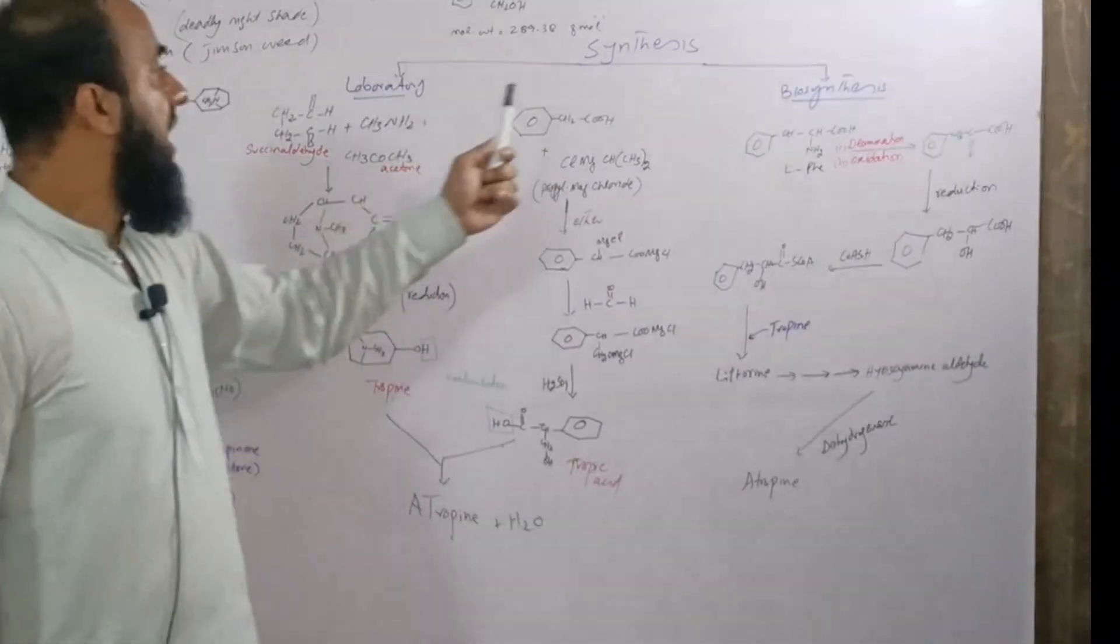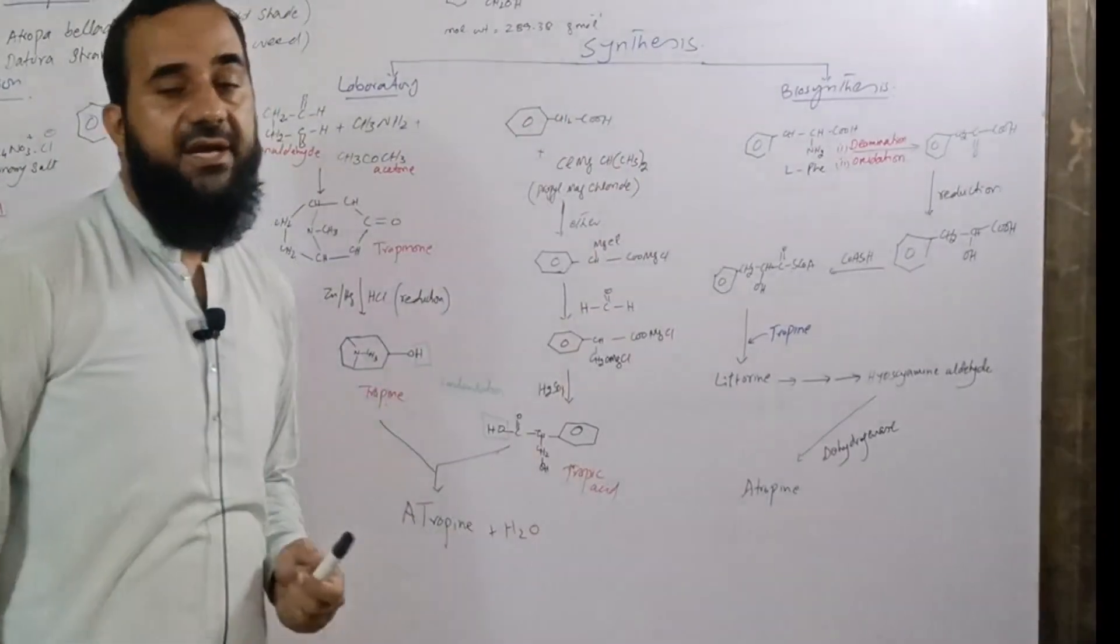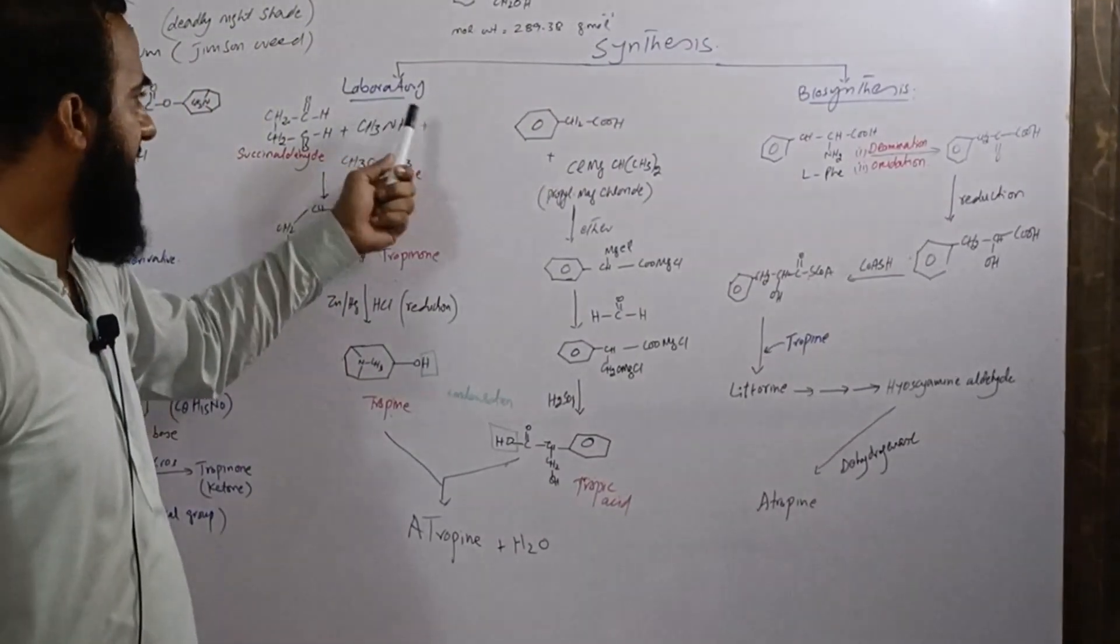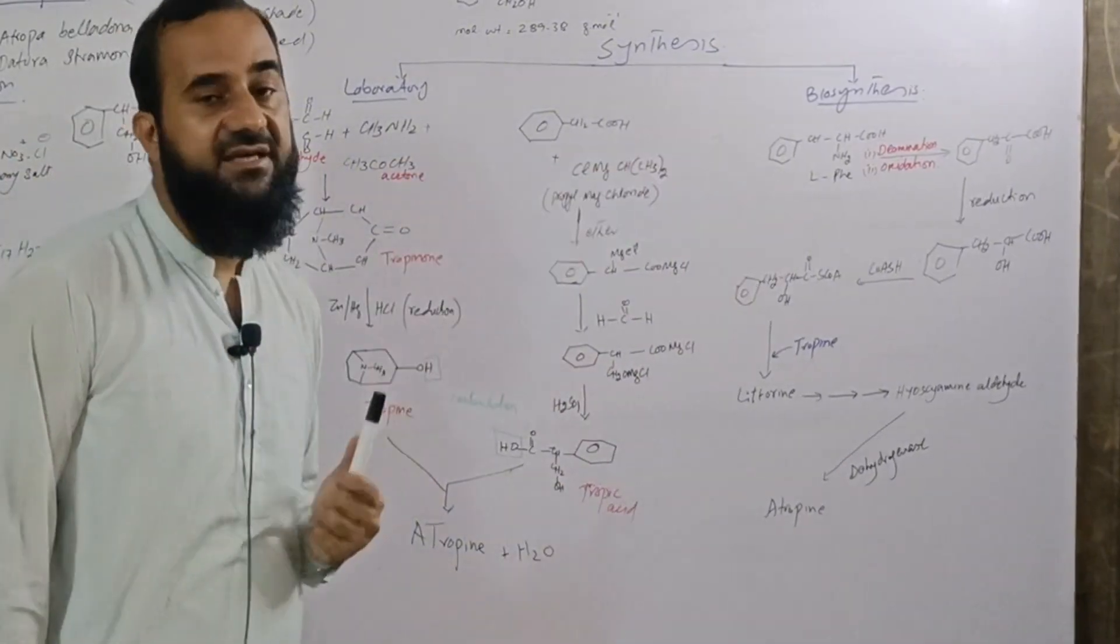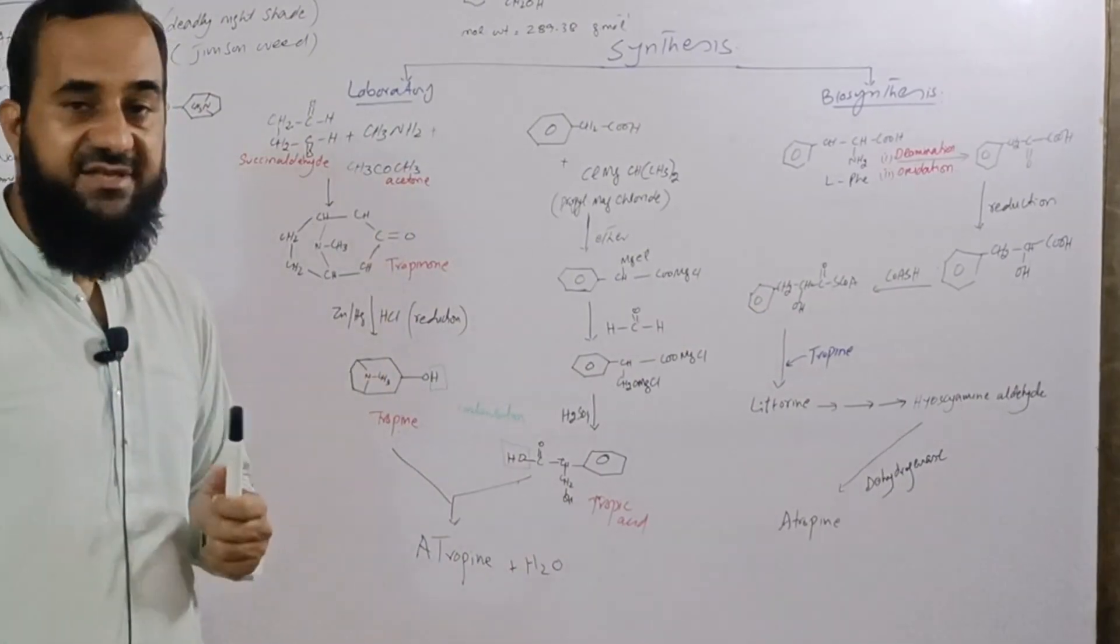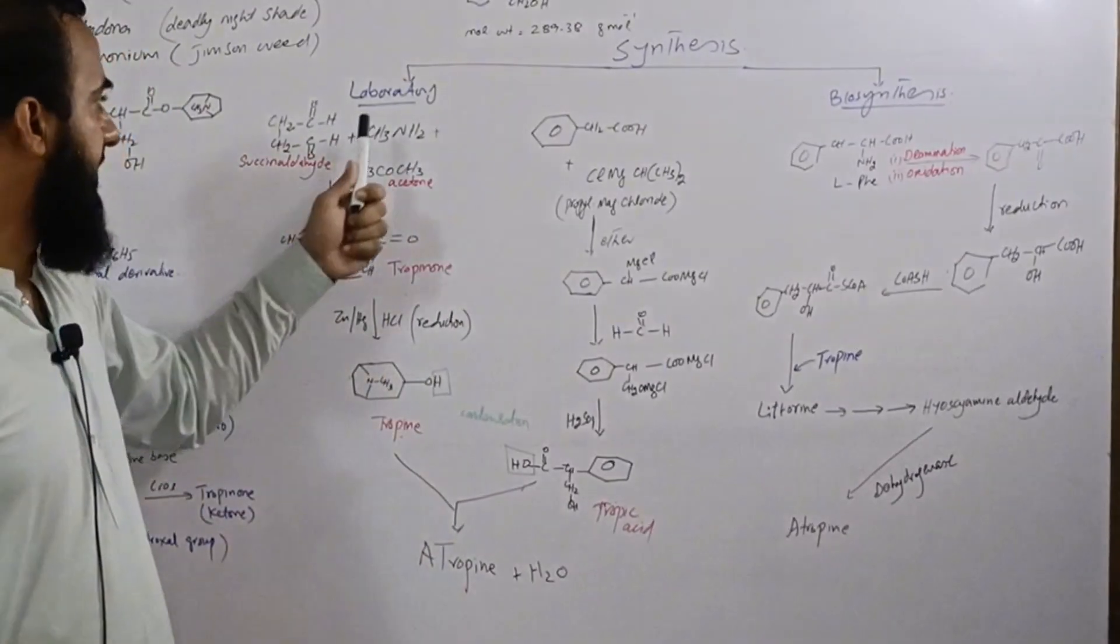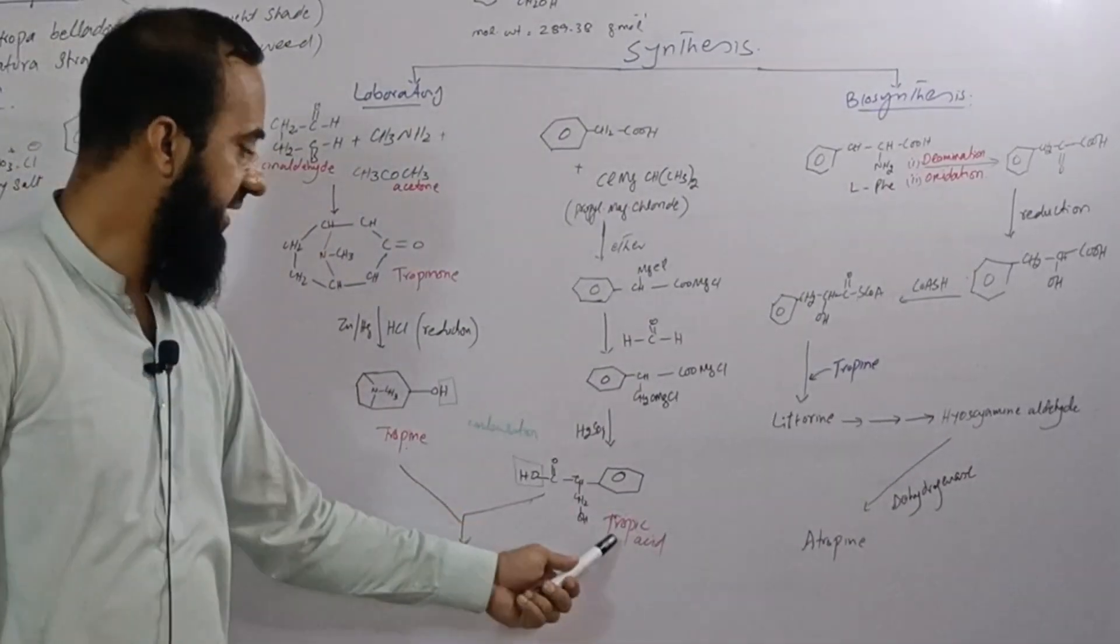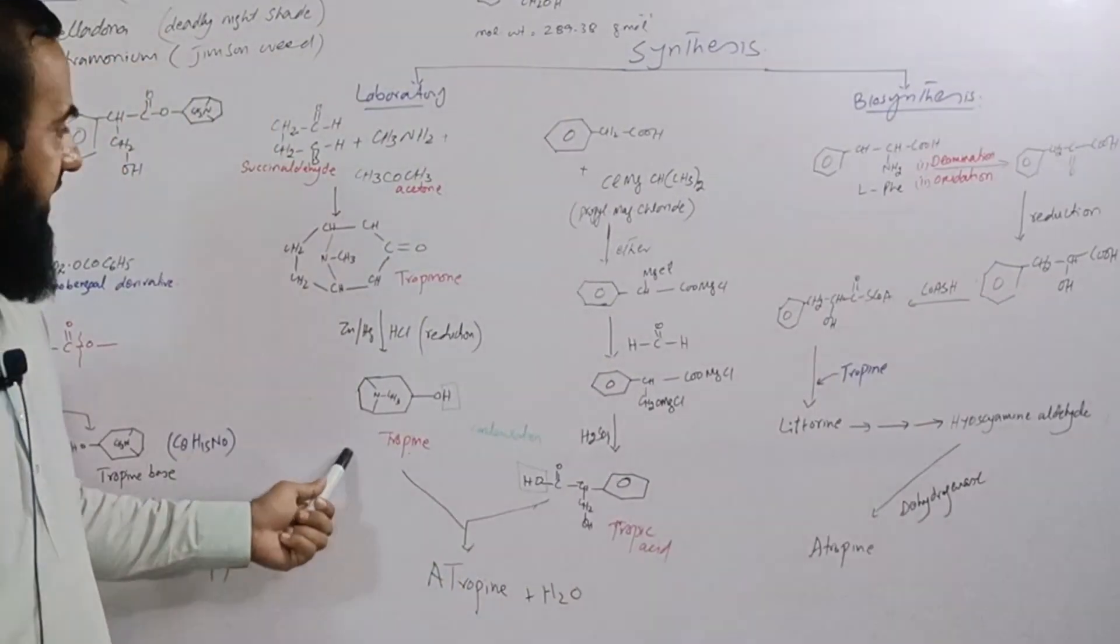Now, how we synthesize atropine. I will discuss laboratory or industrial method as well as its biosynthesis. At industrial scale or in laboratory we prepare atropine by the condensation of tropine and tropic acid.